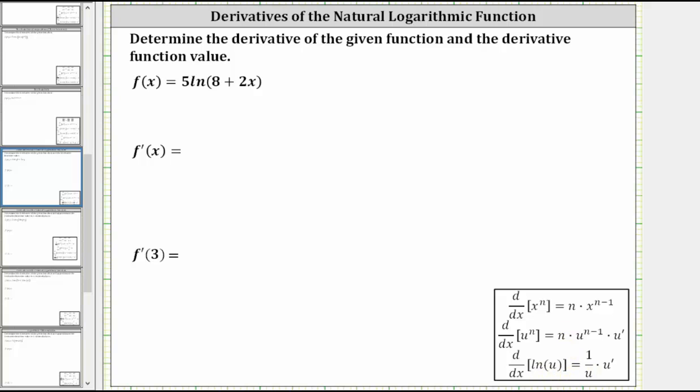Where u is the inner function, which in our case means u is equal to eight plus two x. So if we have u equal to eight plus two x, we can now think of the original function as just five natural log u.